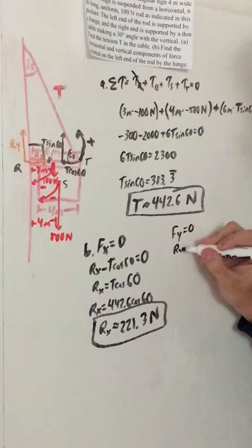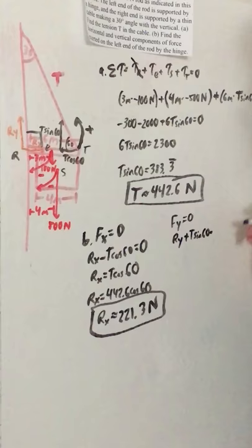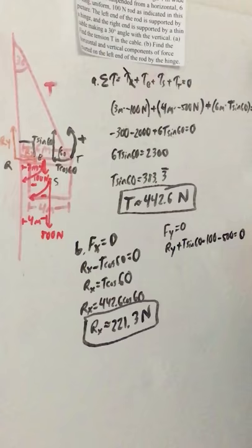And if we take all the forces over here, we can do Ry plus T sine 60 minus 100 minus 500 equals zero.